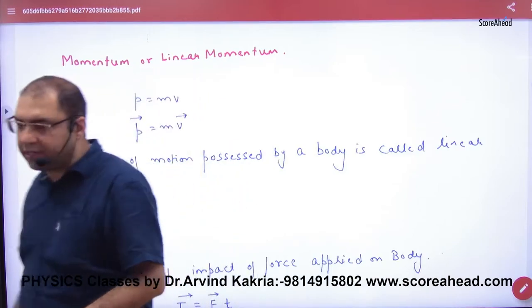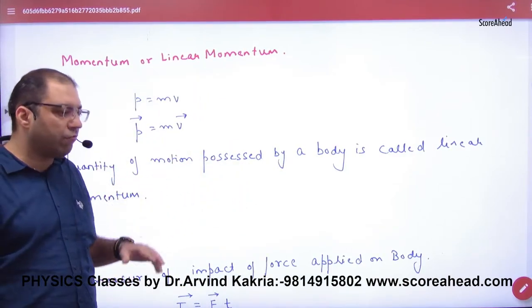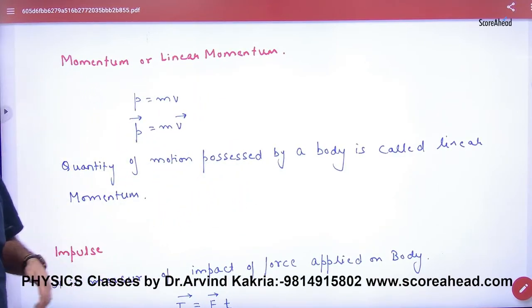So p vector or momentum, how do we define p vector? It is the quantity of motion possessed by the body. It is called linear momentum.